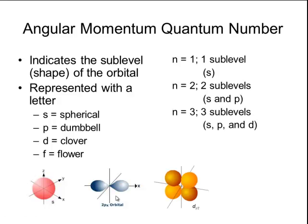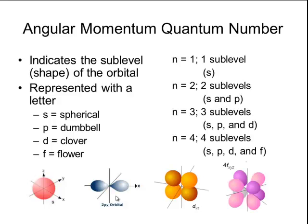If n equals 3, then there are three possible shapes: s, p, and d. So spherical shaped, dumbbell shaped, or clover shaped orbitals. And if n equals 4, there are four possible shapes: s, p, d, and f. So spheres, dumbbells, clovers, and flowers.